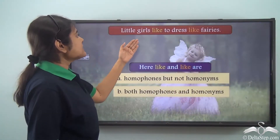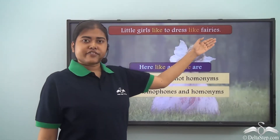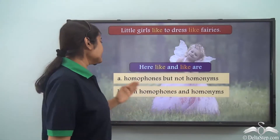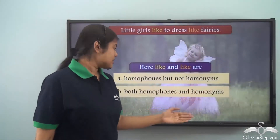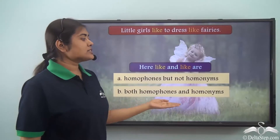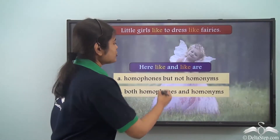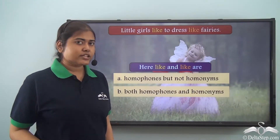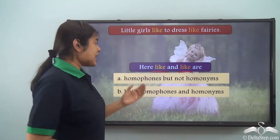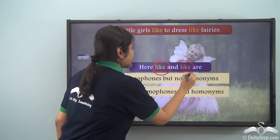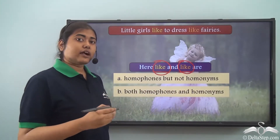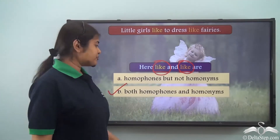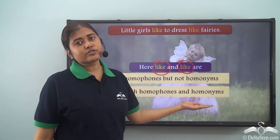Little girls like to dress like fairies. Here 'like' and 'like' — are they: A) homophones but not homonyms, or B) both homophones and homonyms? 'Like' and 'like' have the same pronunciation so they are homophones, and also notice they have the same spelling. So they are also homonyms. Hence the correct answer here would be: both homophones and homonyms.